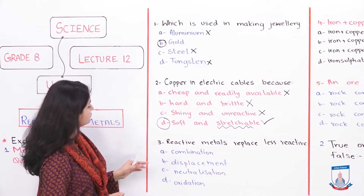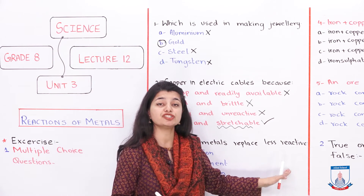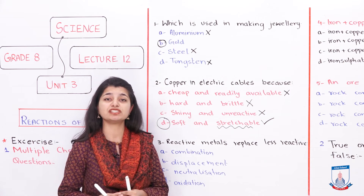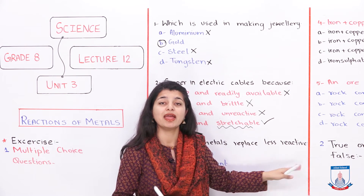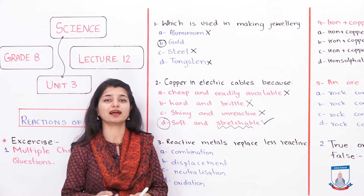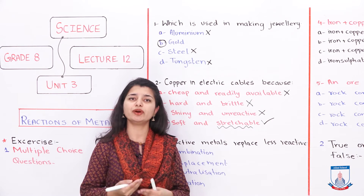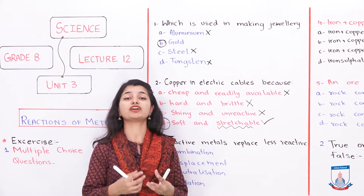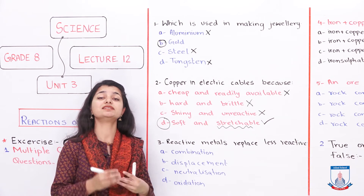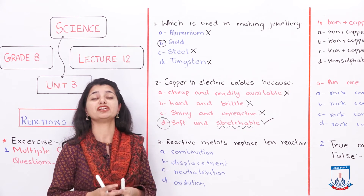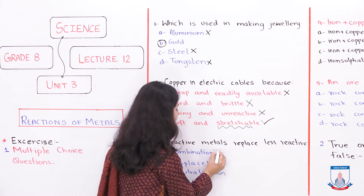Moving to the third MCQ: 'A more reactive metal replaces a less reactive metal. Such a reaction is called...' Option A is a combination reaction. We studied reactions in this chapter but never came across a combination reaction — when metals combine we call them alloys, not a reaction. So option A is cancelled.